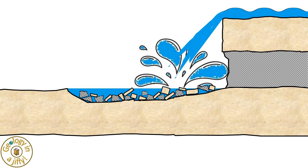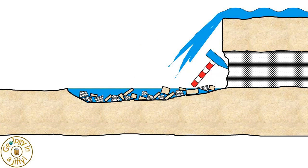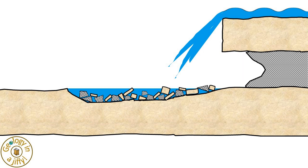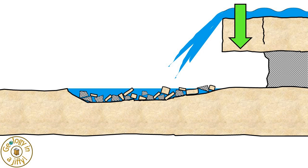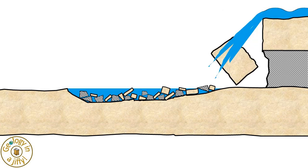Over time, the whole process repeats again and again — the plunge pool becoming longer, the softer layer being continually eroded and the overlying layer dismantled piece by piece — so moving the waterfall further back from where it once stood.